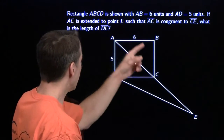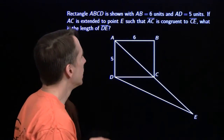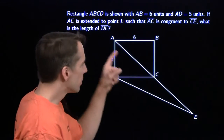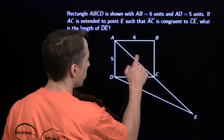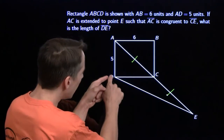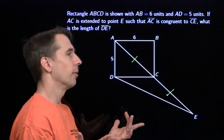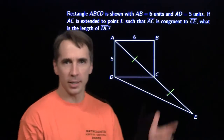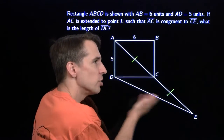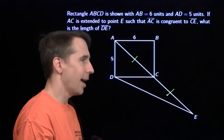We'll go on to the next problem. We have another rectangle ABCD. AB is given as 6, AD is 5. We're extending AC out to point E such that AC is congruent to CE. We'll mark that in our diagram — we always like to add that information in. We want to find the length of DE. Pythagorean theorem — but there's no right triangle with DE as a side length. There's no right triangle there. Yet.